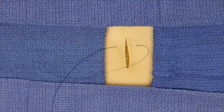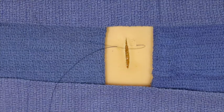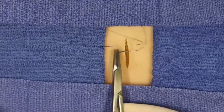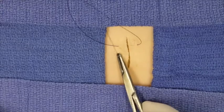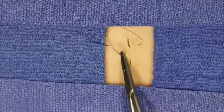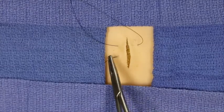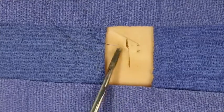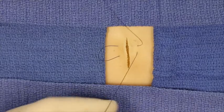The needle is then reloaded with a backhand technique, inserted again at 90 degrees and exits on the contralateral side. At this point a horizontal mattress suture has been placed.